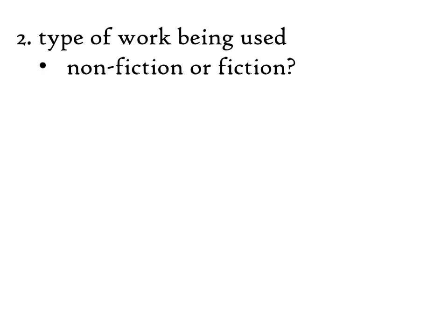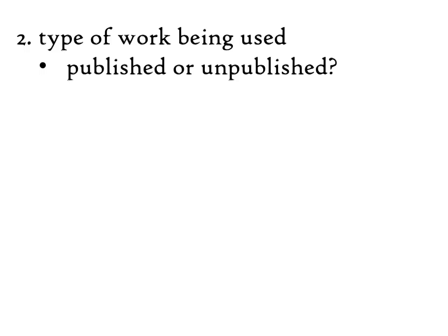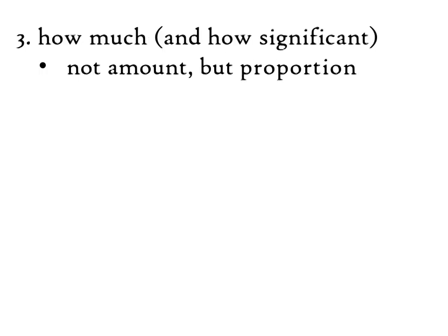The second factor is the nature and character of the work being used. Copyright law is explicitly meant to promote progress in knowledge, science, and technology — it never mentions promoting culture, literature, and the arts. Because of that priority, using a non-fiction work is more favorable to fair use than using a fictional, artistic, or dramatic work. Your use is more likely to be a fair use if you're using a published work. Unpublished works are more strictly protected.